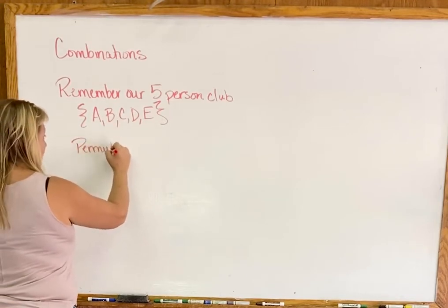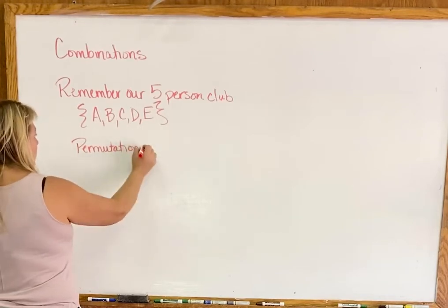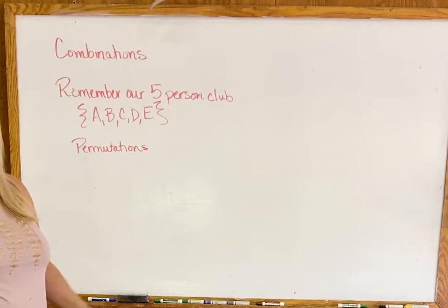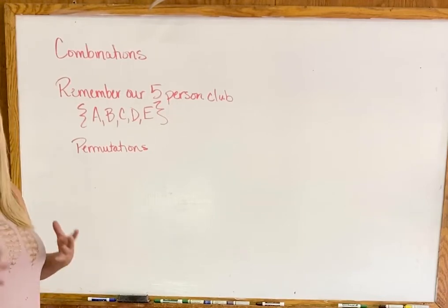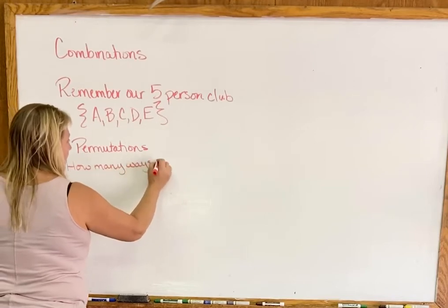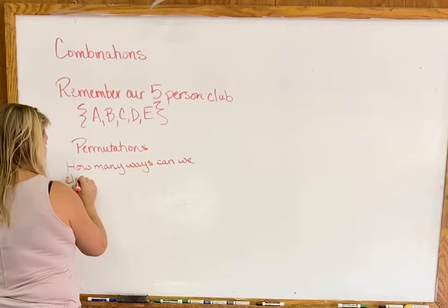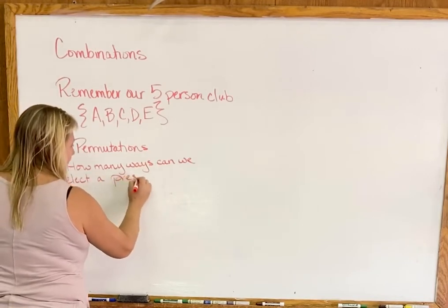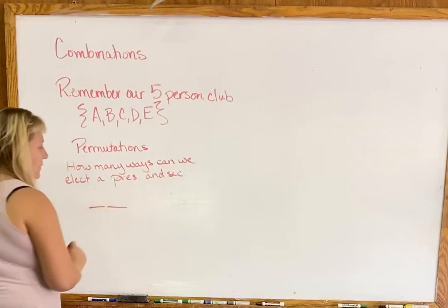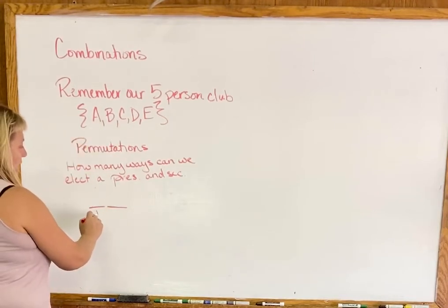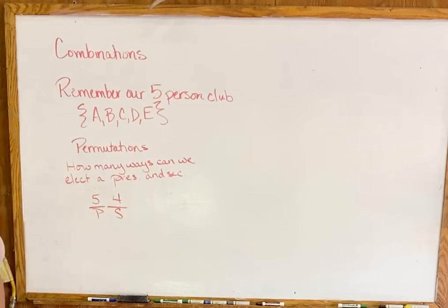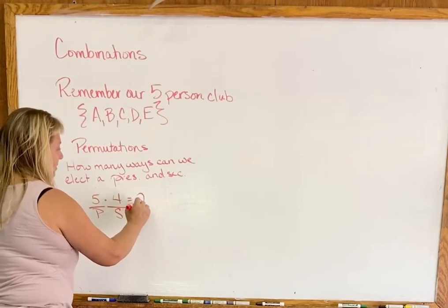Let's start by reviewing what we did last time with permutations. For a permutation, order mattered, which meant we were looking for a president and a secretary — jobs that had meaning. So: how many ways can we elect a president and a secretary? There were five choices for president, then four for secretary, and we multiply: that's 20 different ways.